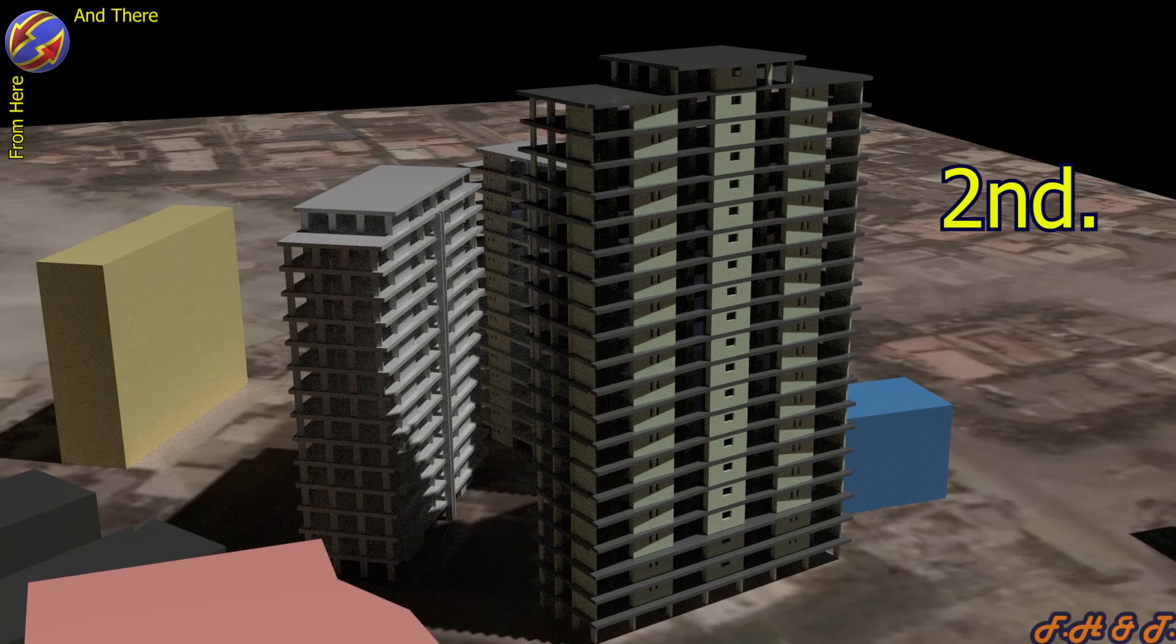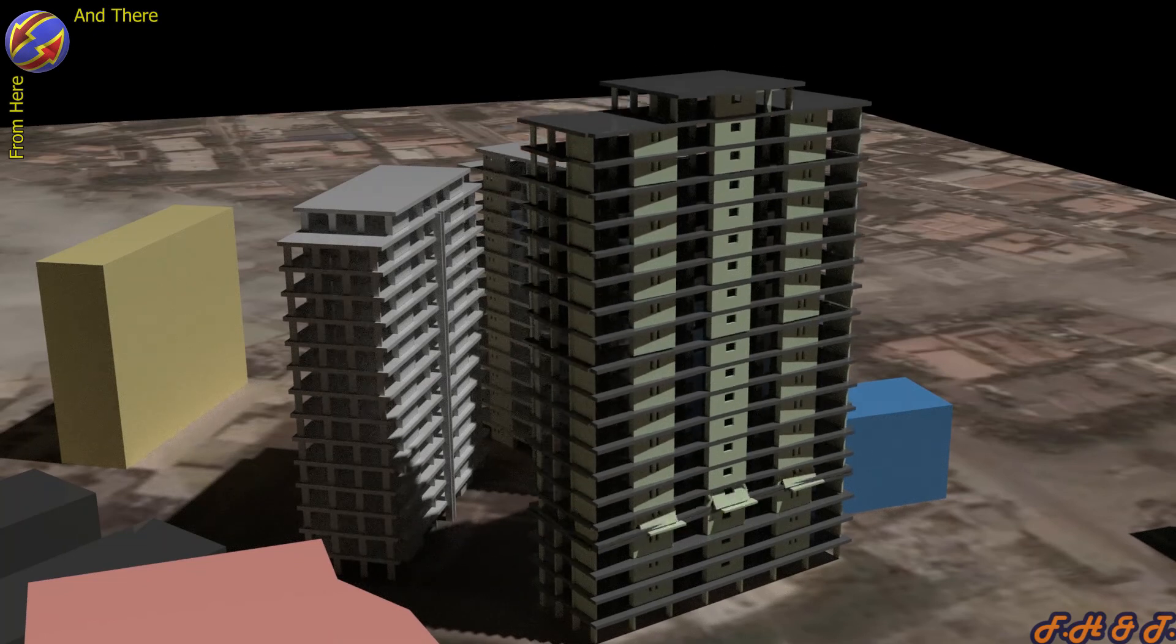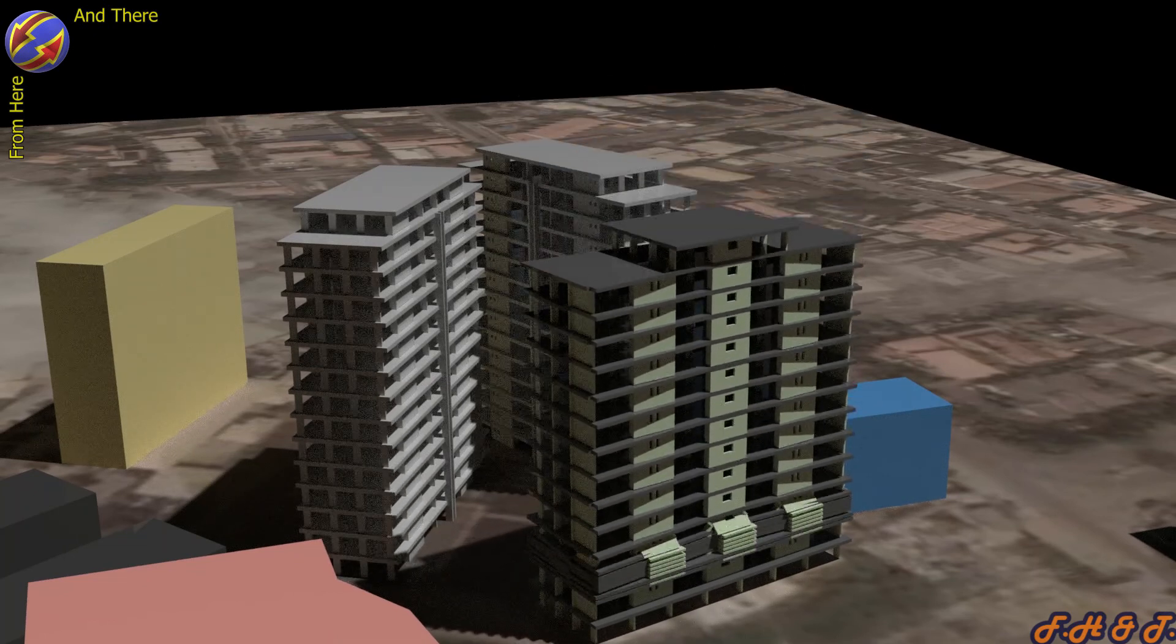Second scenario: The collapse started in the columns of other level up to the top, as the collapse continued causing a redistribution of loads, which led to the collapse of the lower stories.